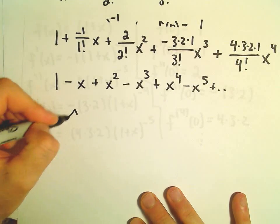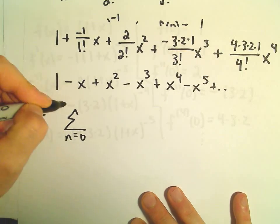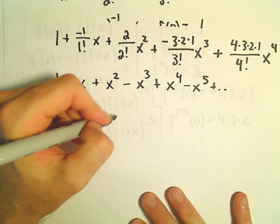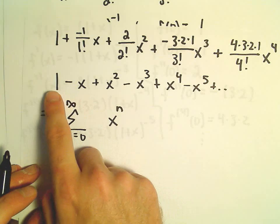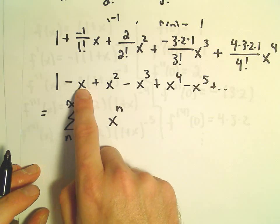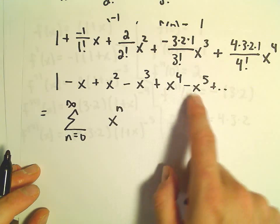So we could rewrite this as the summation from n = 0 to infinity. Let's see, I think we can use x to the n power, because when we plug in 0 we'll get x to the 0, which is a constant. We'll get x to the 1st, 2nd, 3rd, 4th, etc.